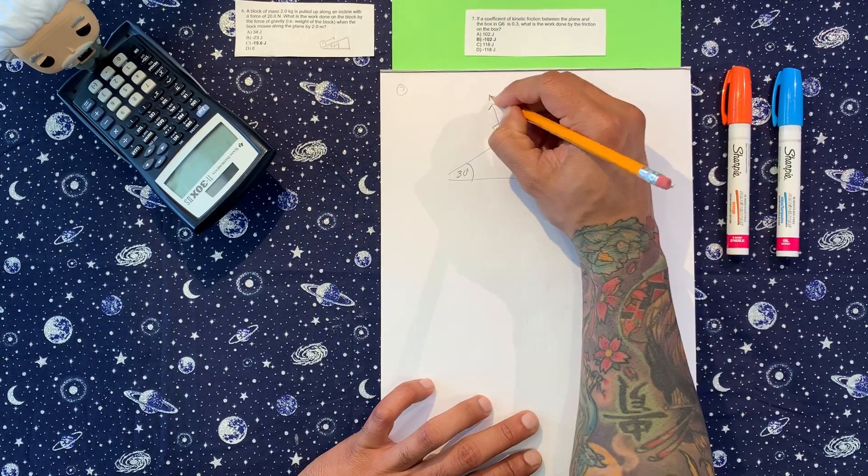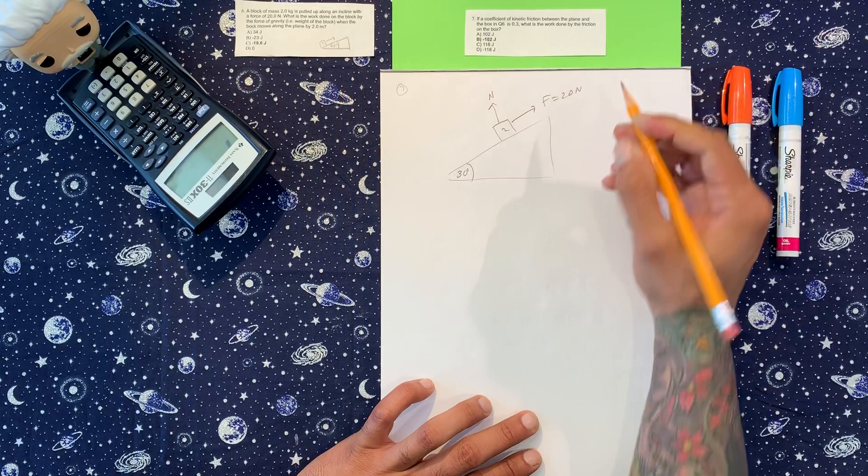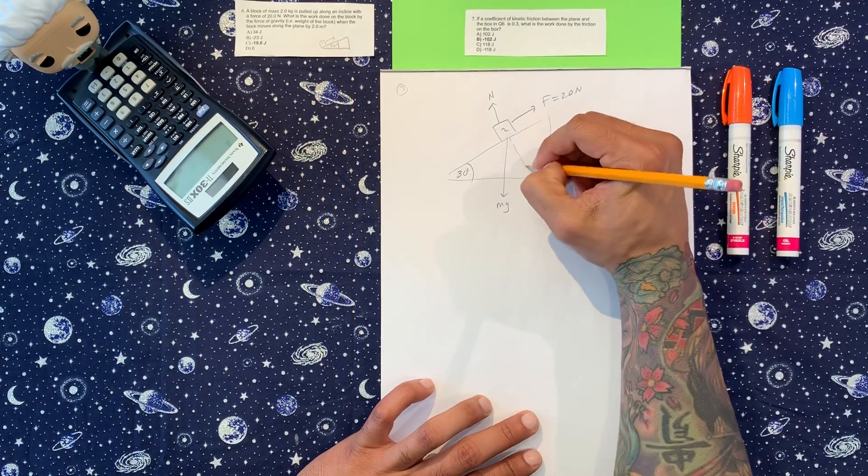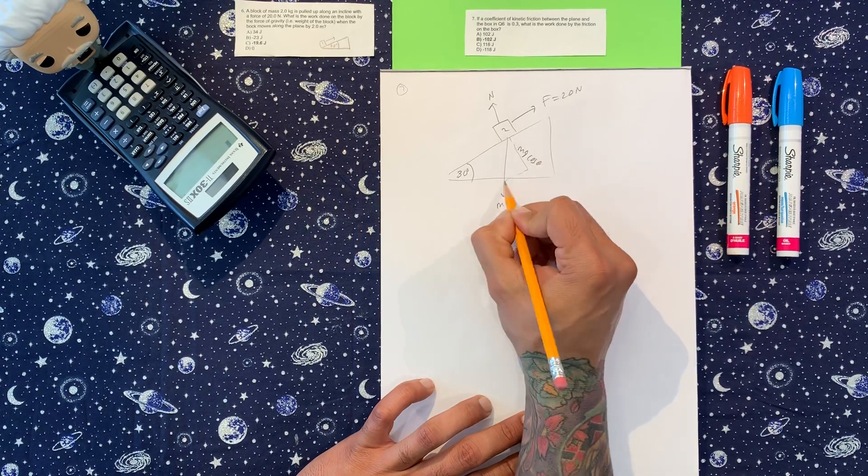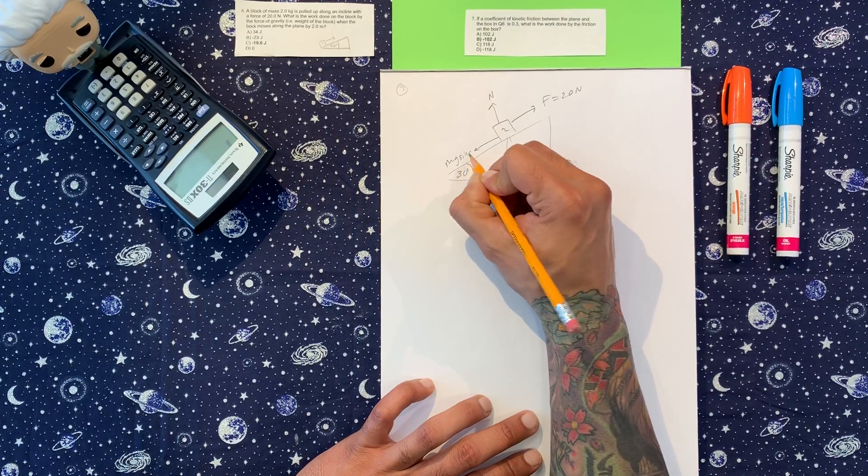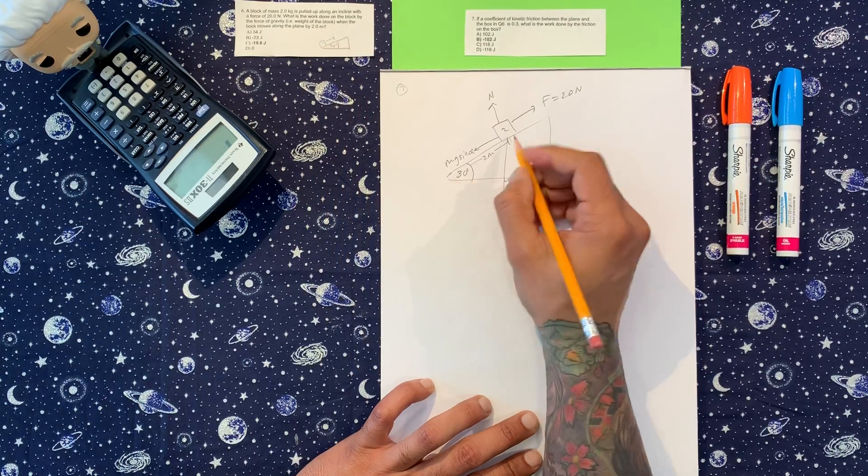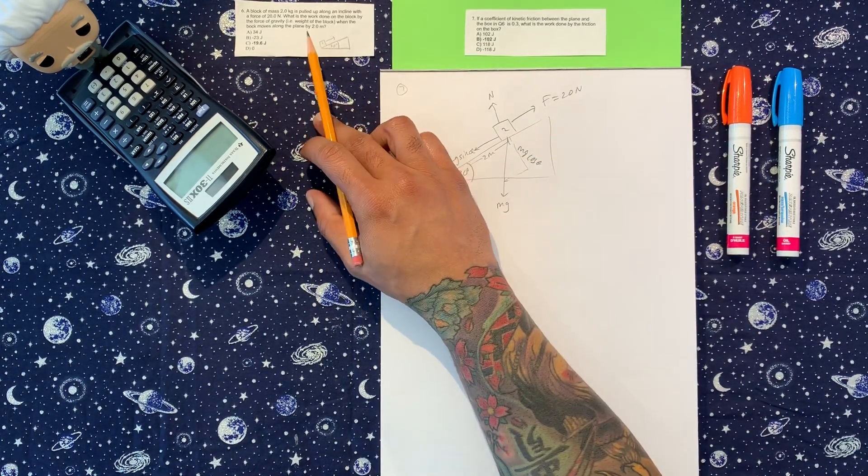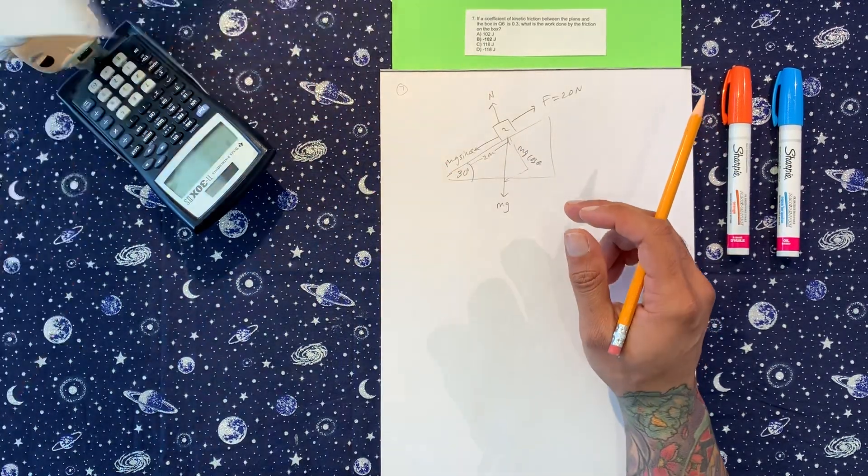So we had the normal, we had a force in this direction of 20. We have mg. This way we have mg cosine and then mg sine theta. So it moved up two meters. And I think that's everything we need to know from this one. So I'm going to move it out the way.